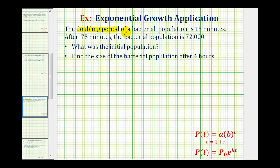The doubling period of a bacterial population is 15 minutes. After 75 minutes, the population is 72,000. We want to determine the initial population and determine the size of the population after four hours.